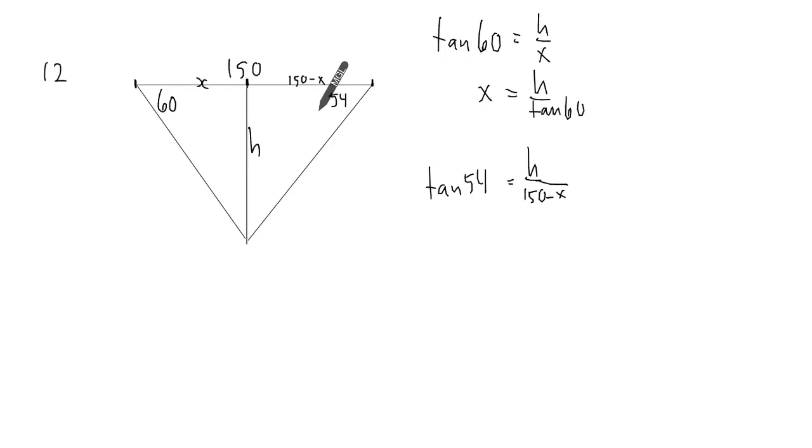Remember, I'm solving for h so I don't want x's. What I'm going to do is take this x here and substitute it in over here. I get h over 150 minus x is h over 60.